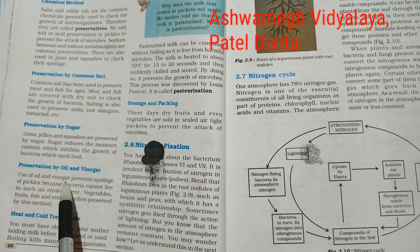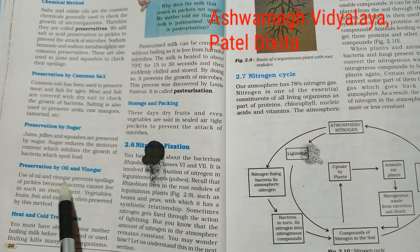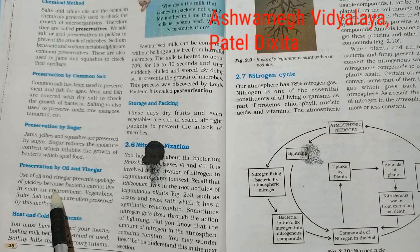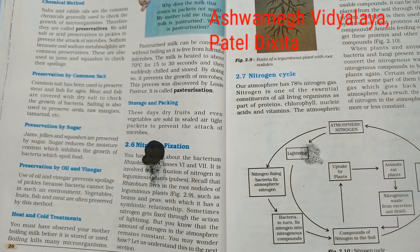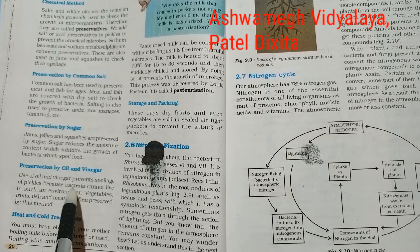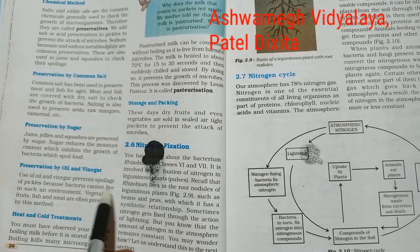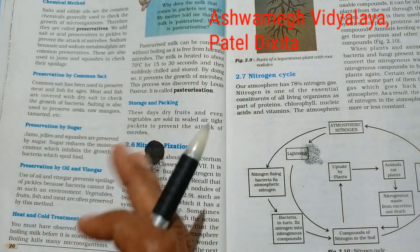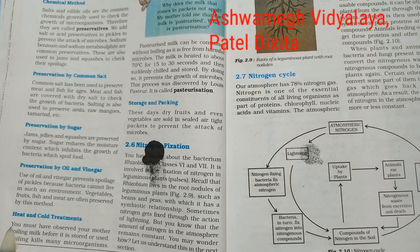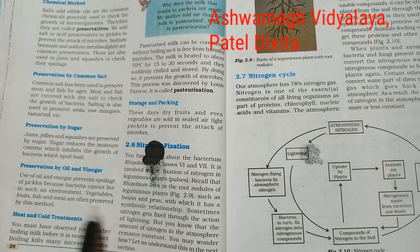Use of oil and vinegar prevents spoilage of pickles because bacteria cannot live in such an environment. Oil and vinegar create an environment in which bacteria cannot survive. Vegetables, fruits, fish, and meat are often preserved by these methods.